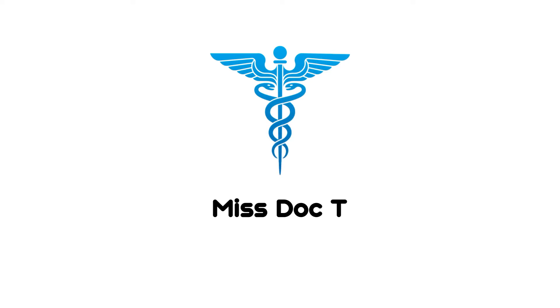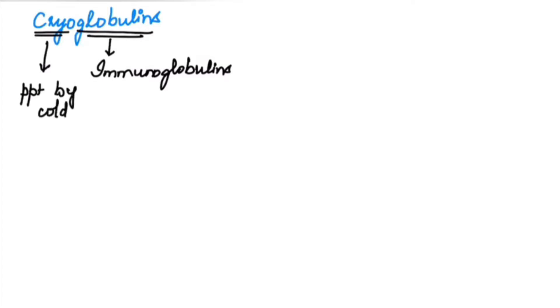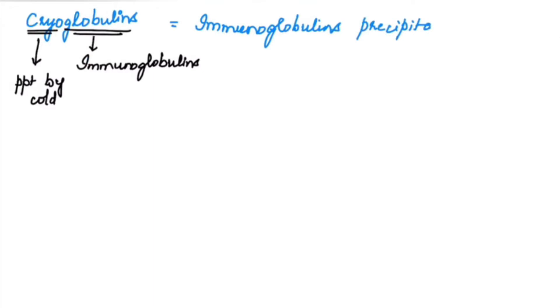First we will see what are cryoglobulins. As the name indicates, globulins means immunoglobulins and cryo means they are precipitated by cold temperatures. So cryoglobulins are immunoglobulins that are precipitated at cold temperatures.